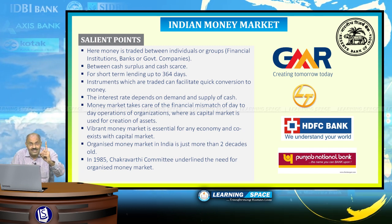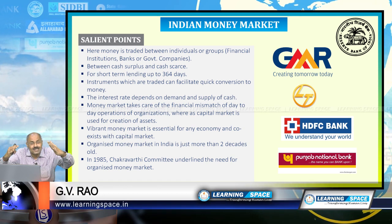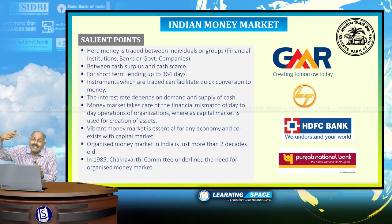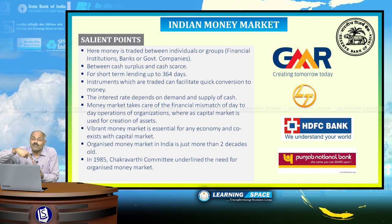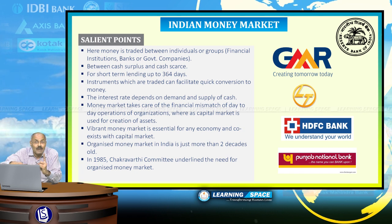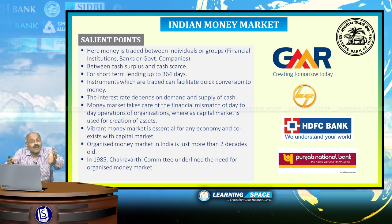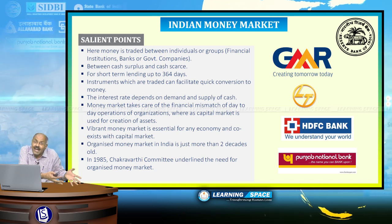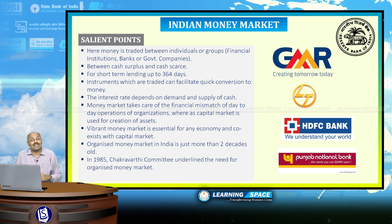For the growth of any economy, both money market and capital market are very much essential and should co-exist. In personal life, you need a friend who can give money for one day or two days, for six or seven months, and also for four or five years. Likewise, in the financial system of any country, there should be organizations ready to give money for one day, a few months, or years together.